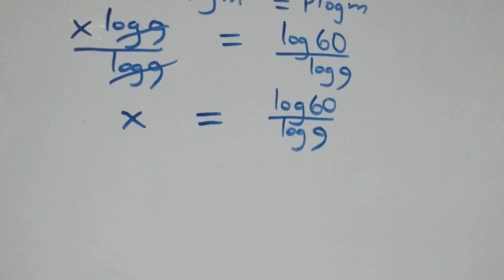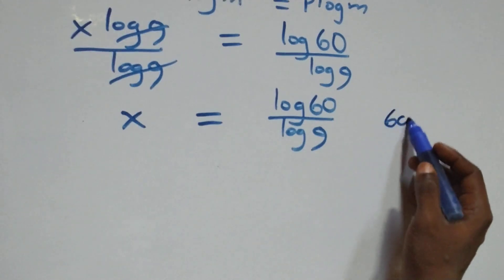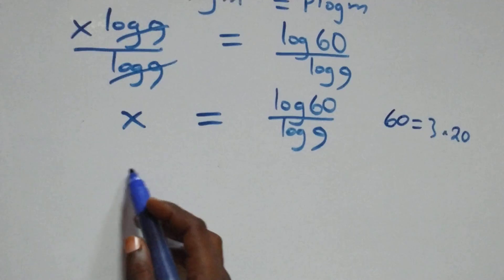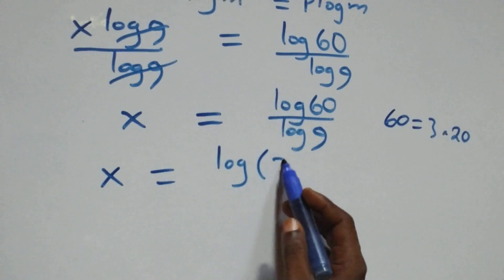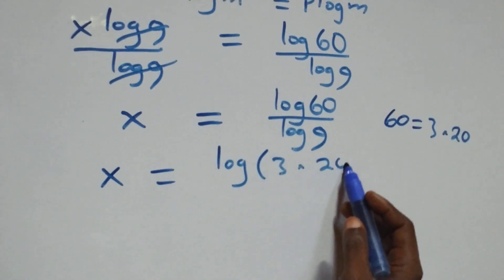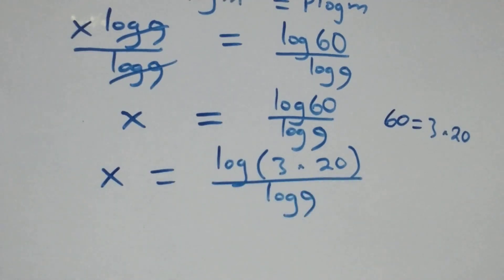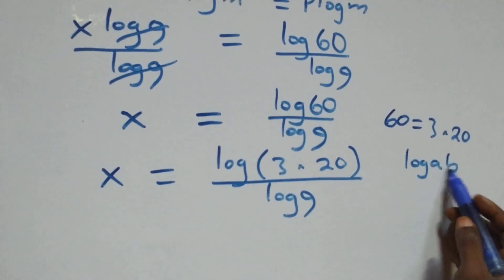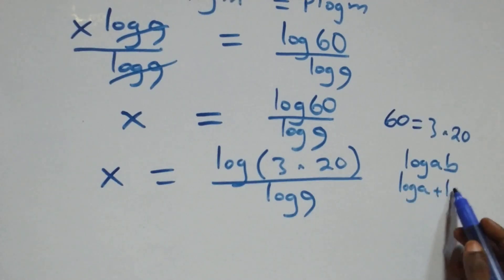We can express 60 as 3 times 20, so x becomes log(3 times 20) over log 9. Applying the log product rule — log(a times b) equals log a plus log b — this becomes log 3 plus log 20, all over log 9.